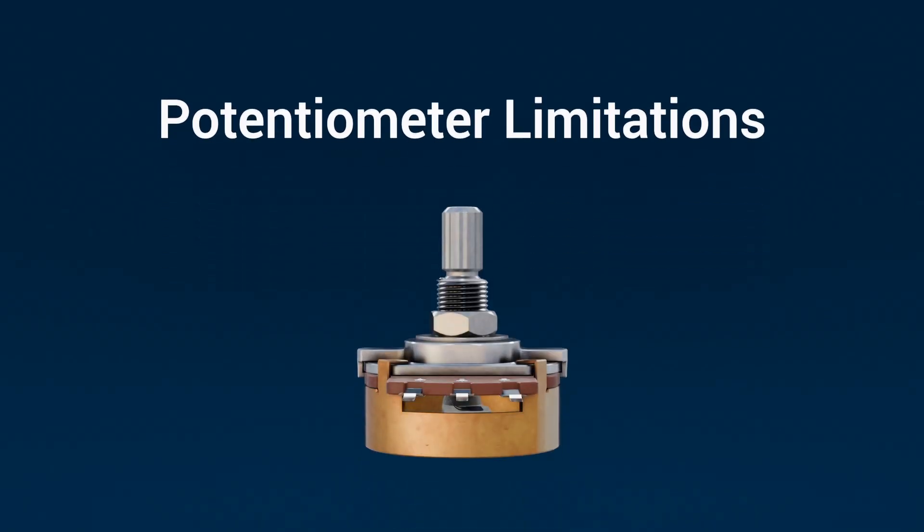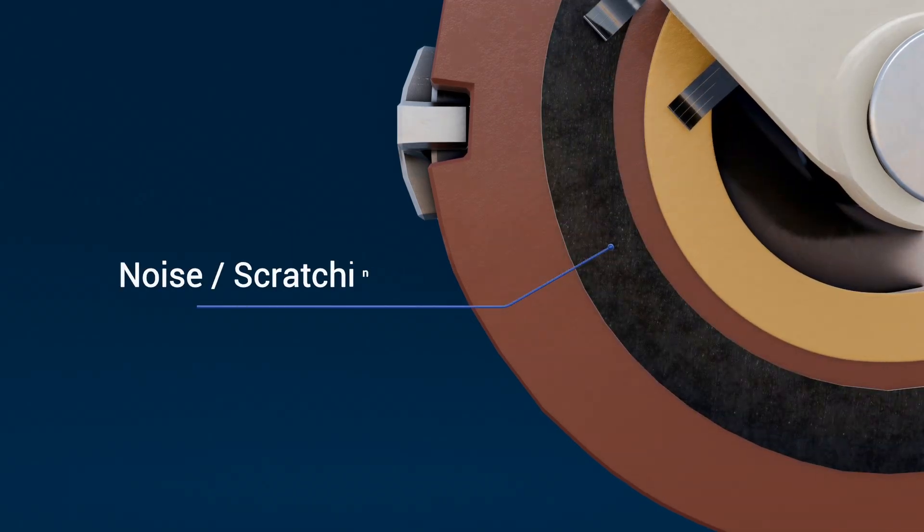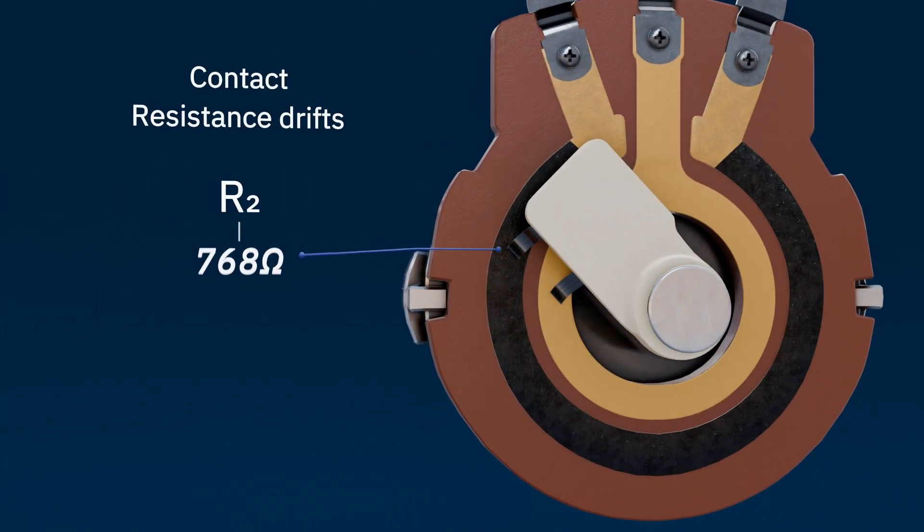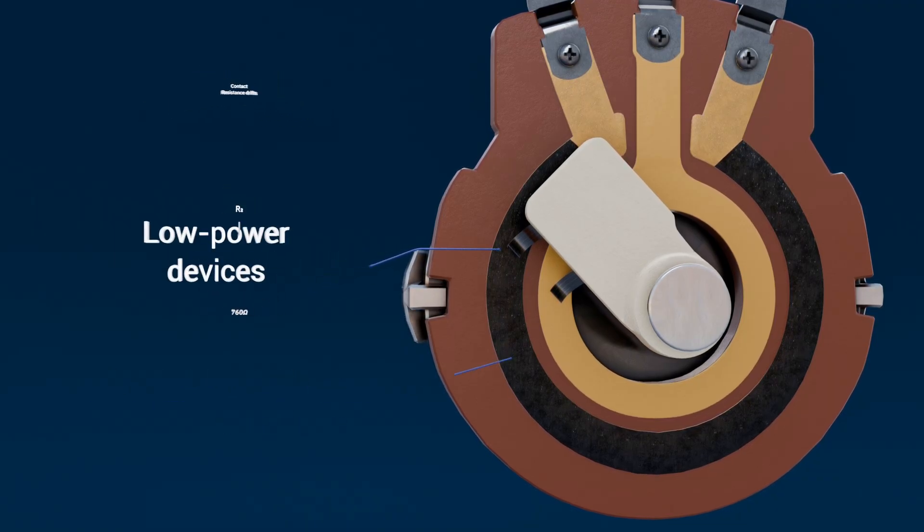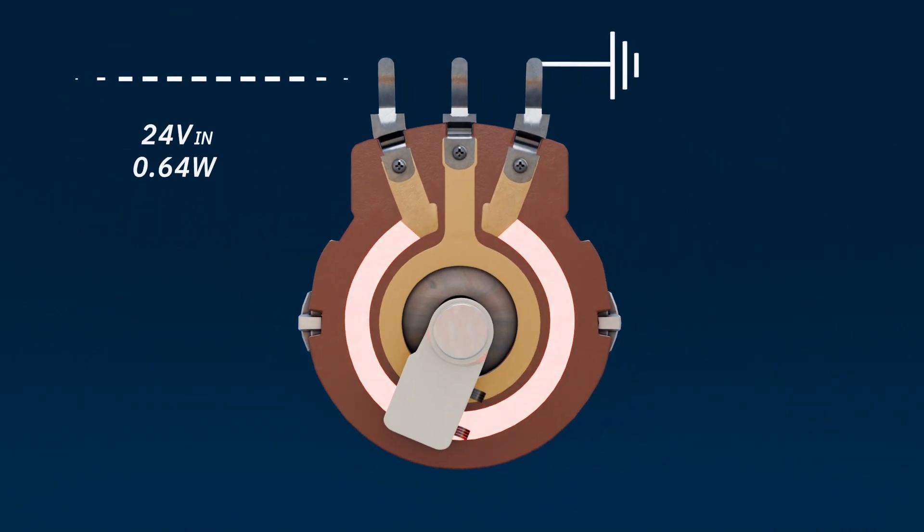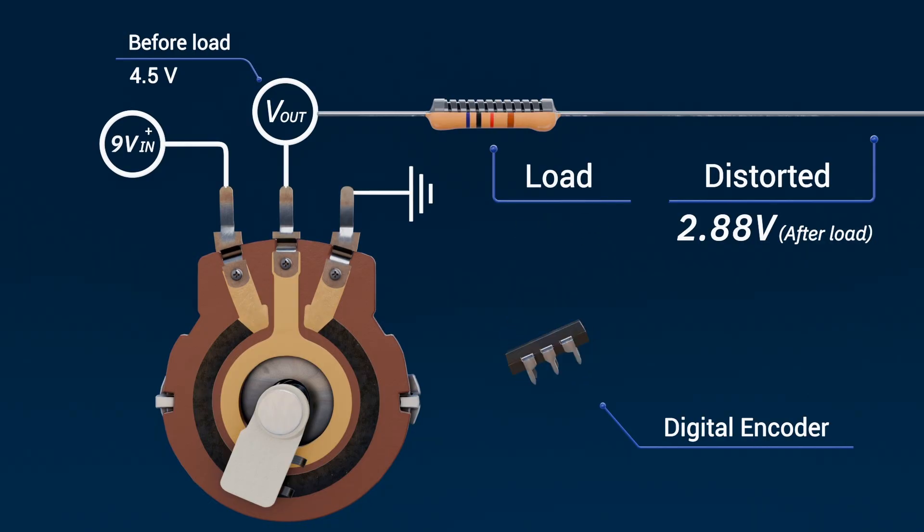Potentiometer limitations. As with any component, potentiometers have their drawbacks. Mechanical wear from constant movement can create noise or scratchiness, and dust or humidity can interfere with the wiper's contact with the track. Over time, the contact resistance can drift, especially in low-cost carbon types. There are also low-powered devices, usually rated only for a fraction of a watt, so high current can easily damage the resistive track. And if the load connected to the wiper has too low resistance, it can distort the voltage divider behavior and reduce accuracy. That's why digital or optical encoders are often replacing them in high-precision and long-life applications.